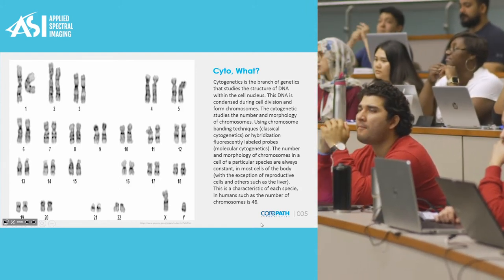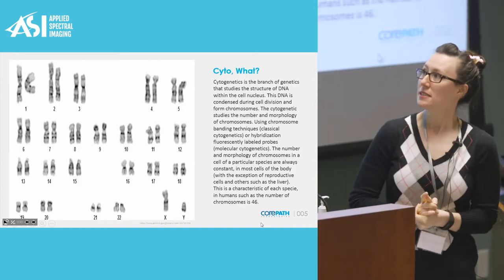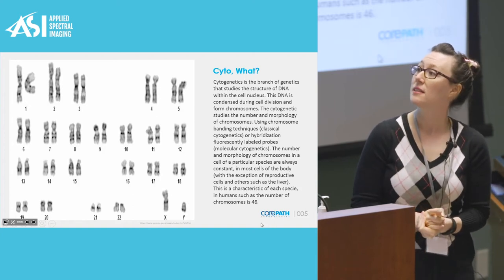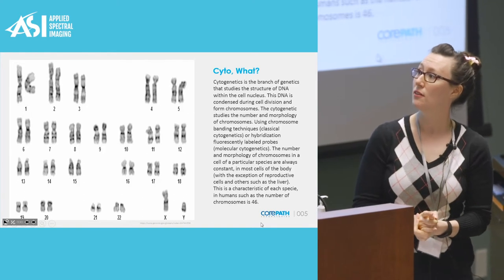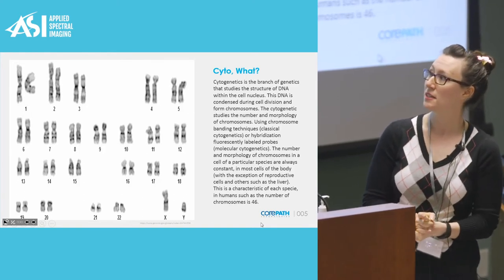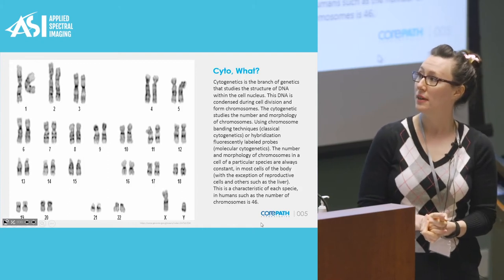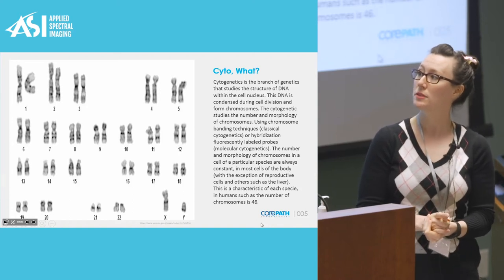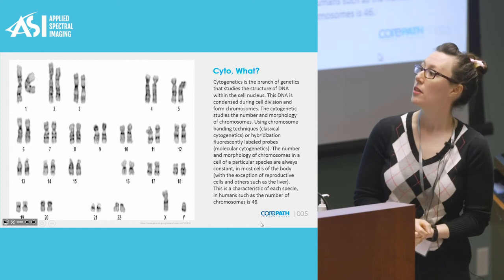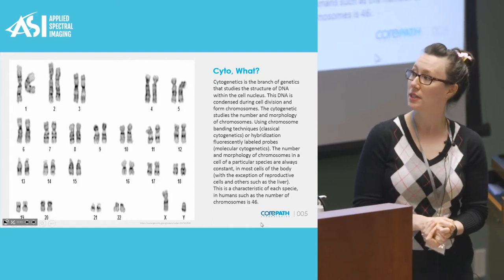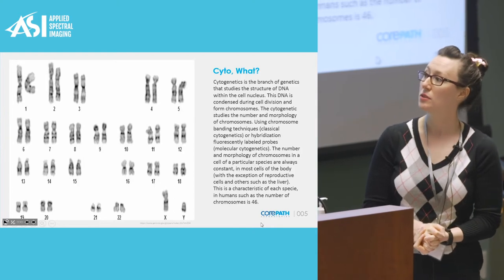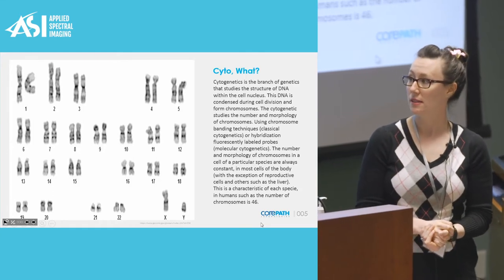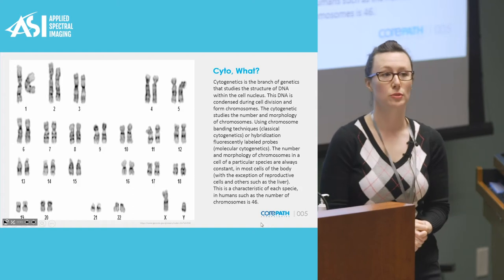This is a definition from genome.gov. Cytogenetics is a branch of genetics that studies the structure of DNA within the cell nucleus. This DNA is condensed during cell division and forms chromosomes. Cytogenetics studies the number and morphology of chromosomes using chromosome banding techniques in classical cytogenetics, or hybridization of fluorescently labeled probes in molecular cytogenetics, or FISH. The number and morphology of chromosomes in a cell of a particular species are always constant, with the exception of reproductive cells and others such as the liver. In humans, the number of chromosomes is 46.